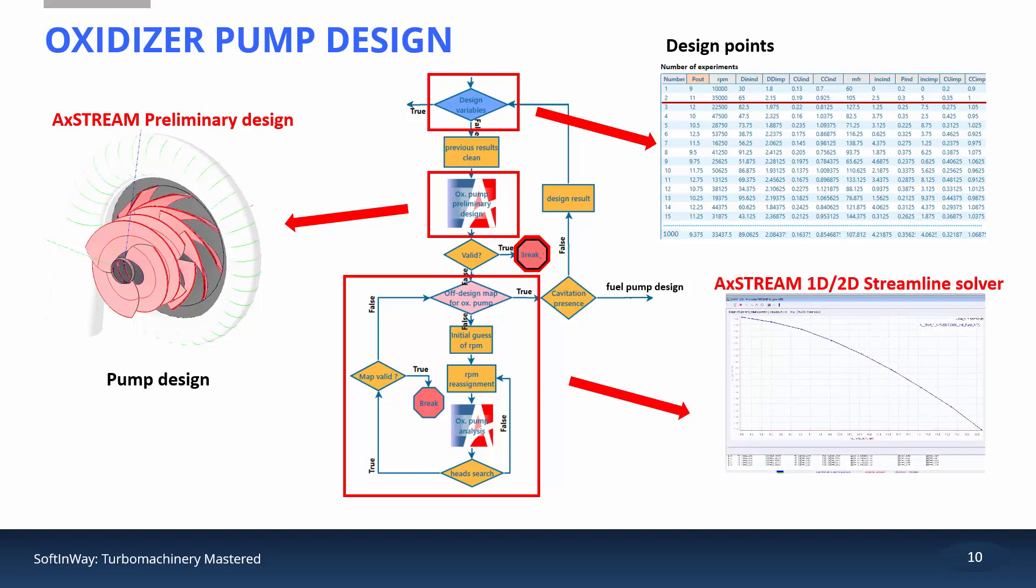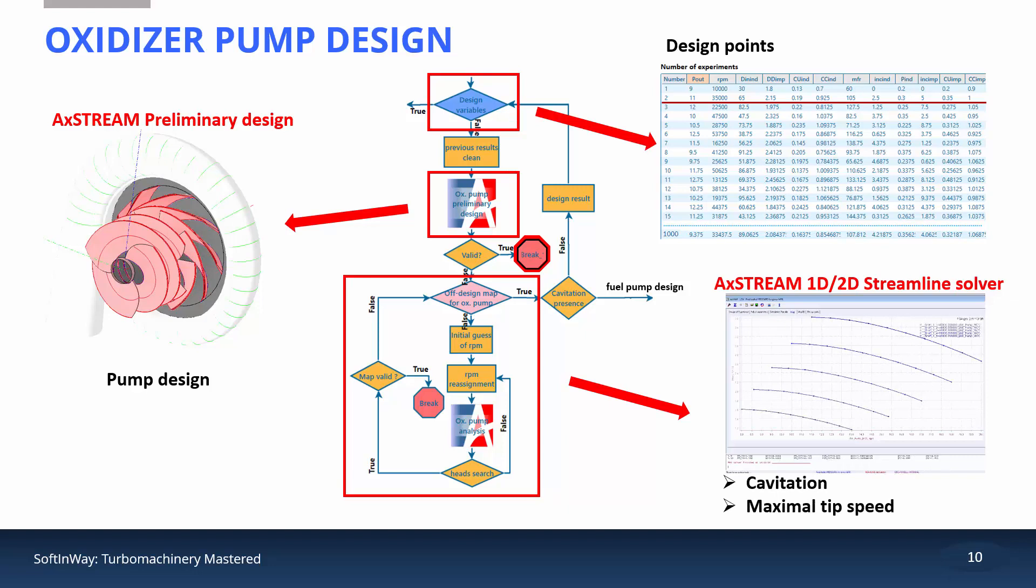The criteria for a good pump design are the absence of cavitation, not exceeding the maximal tip circumferential velocity, and the capability of the pump to operate at all required modes. If at least one criterion is not satisfied, the design of a new oxidizer pump is started, and the current design is discarded. If all criteria fit the requirements, the process moves to the fuel pump design and analysis. The output data from the oxidizer pump design and analysis are the shaft speed, power, and efficiency at each off-design mode.